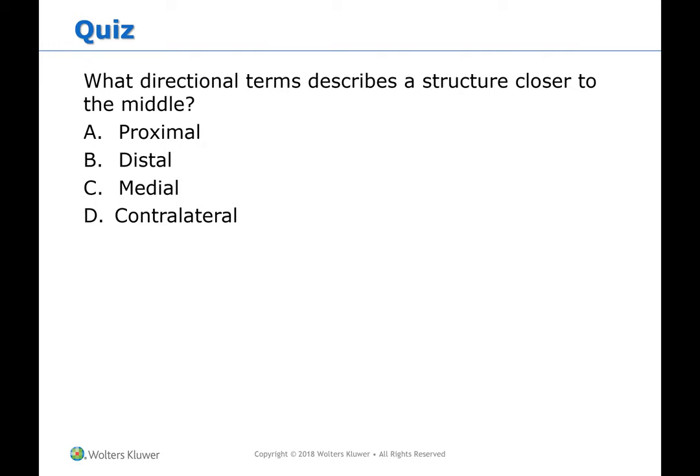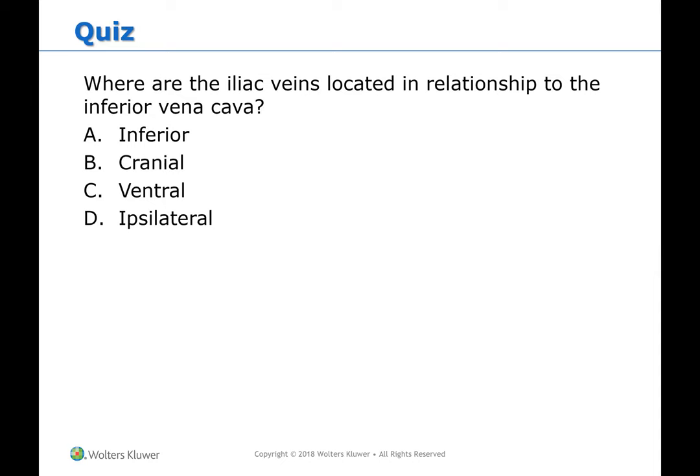Quiz: What directional term describes a structure closer to the middle? The answer is C — medial. When scanning kidneys, for example, we scan through the whole kidney starting at the mid kidney, then scan medially into the body toward the middle, and then scan laterally outward. For the next question: Where are the iliac veins located in relationship to the inferior vena cava? They are inferior or caudal to the IVC. The confluence of the iliac veins forms the IVC, so they are below it.